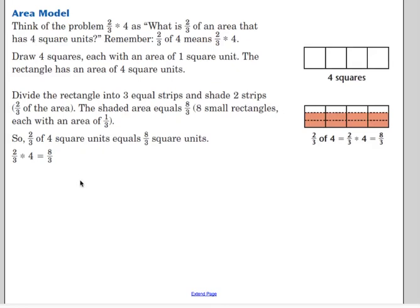You can also use the area model. Think of the problem two thirds times four as what is two thirds of an area that has four square units. Remember, two thirds of four means two thirds times four. So, you could draw four squares with each an area of one square unit. The rectangle has an area of four square units. Then divide the rectangle into three equal strips, so you're making thirds here. And shade two strips to show two thirds of the area. The shaded area equals one, two, three, four, five, six, seven, eight, eight thirds. There's eight small rectangles here. Each of them has an area of one third. So, two thirds of four square units equals eight third square units, which if we simplify that like we did in the last problem, we get two and two thirds.